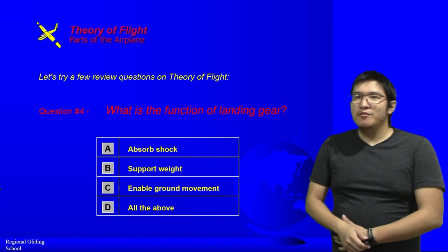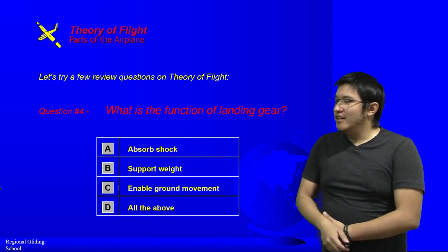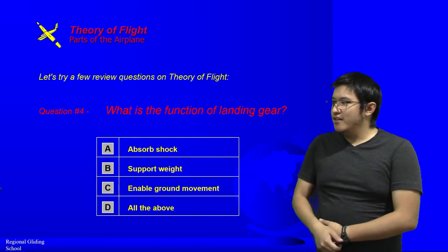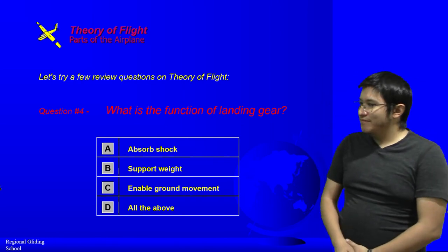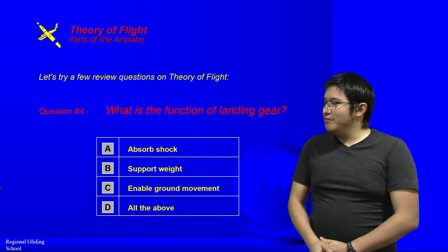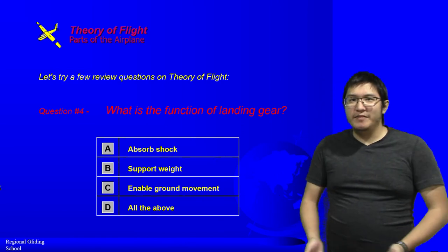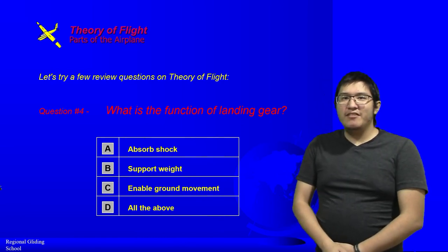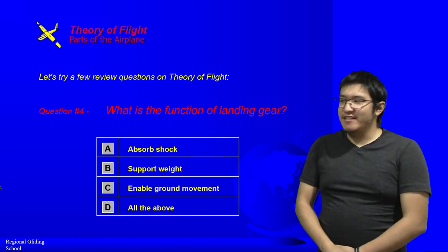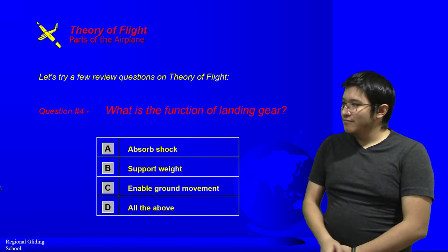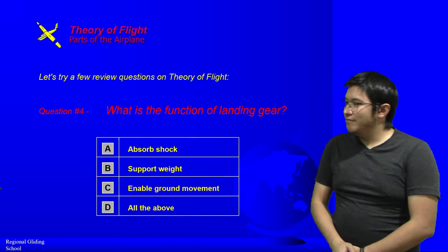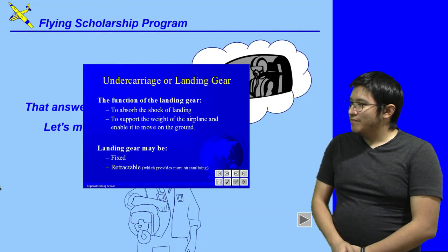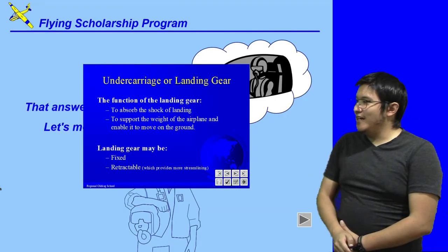What is the function of landing gear? A) absorb shock, B) support weight, C) enable ground movement, or D) all of the above. The answer is all of the above.